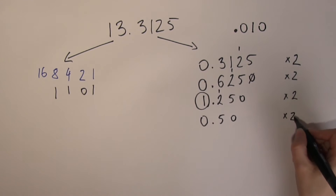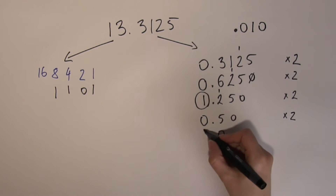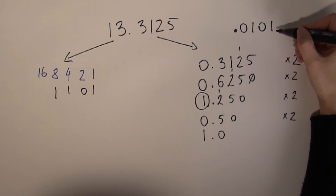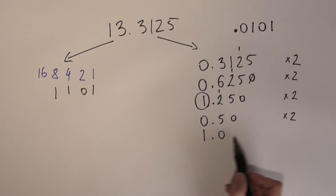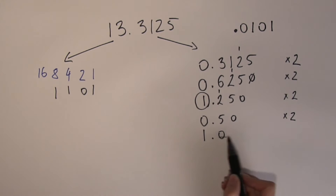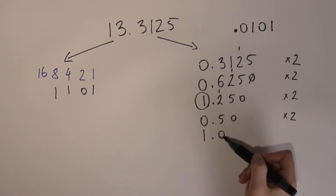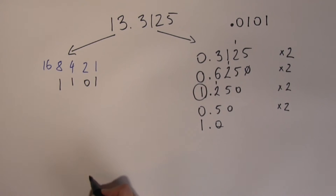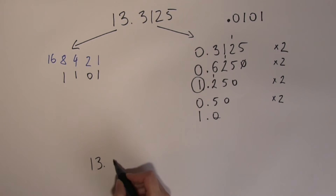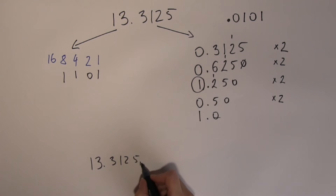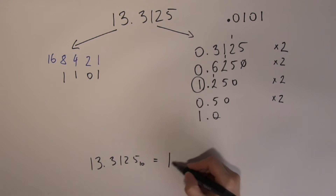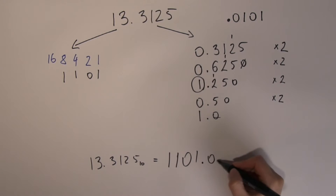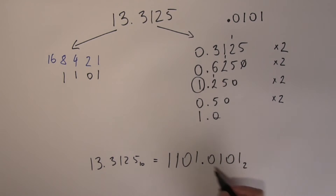Double again: 2 times 5 is 10. There is an overflow — this is my last digit because from here on I have no more fractional parts. You stop when you end up with a 0 in the fractional part. Pulling the two together, 13.3125 in decimal is the same as 1101.0101 in binary.